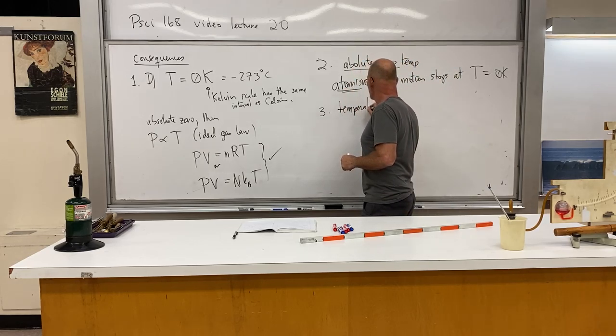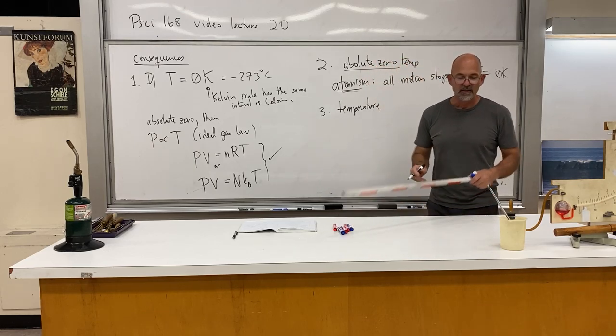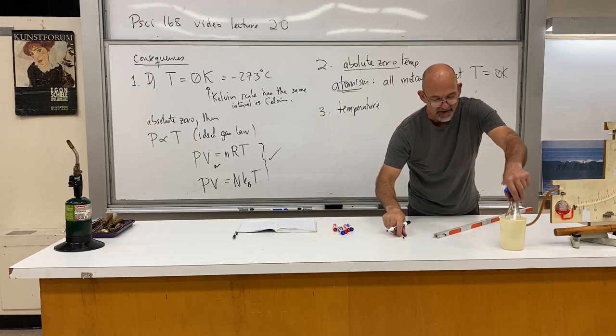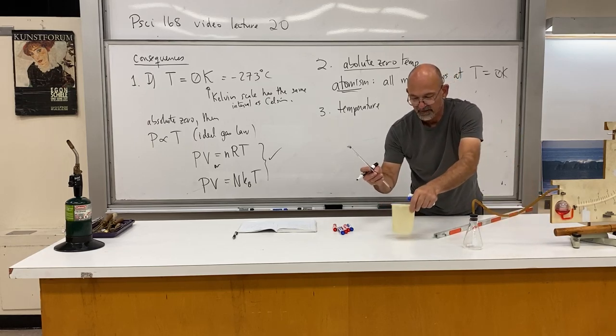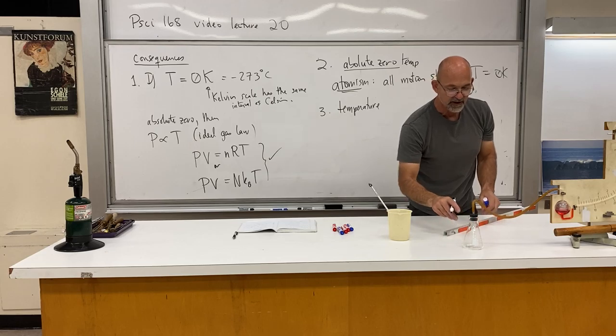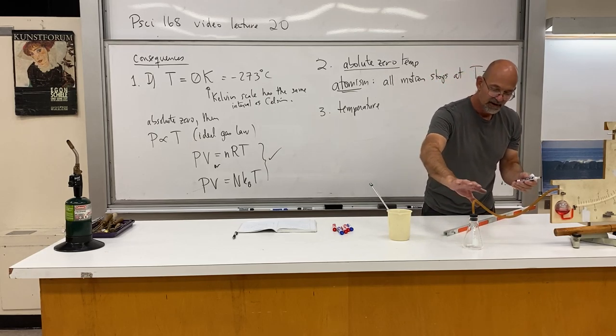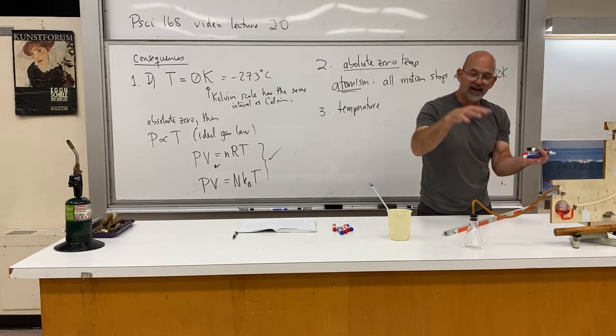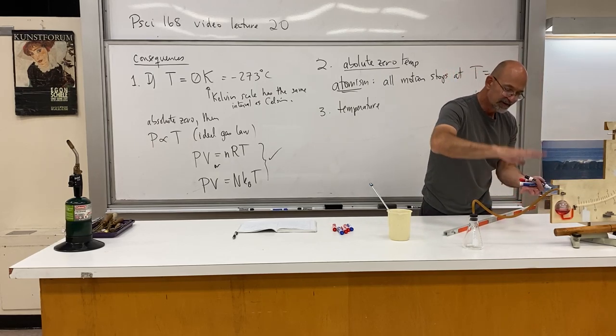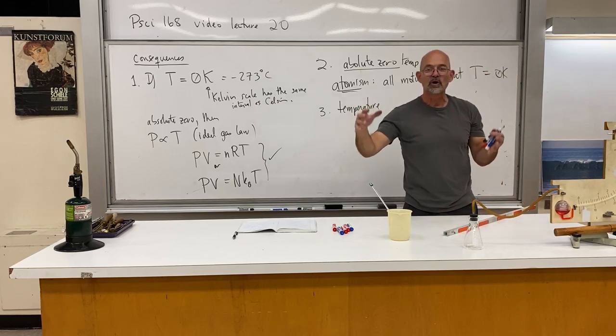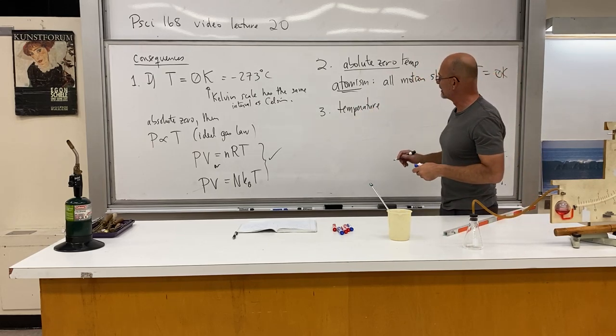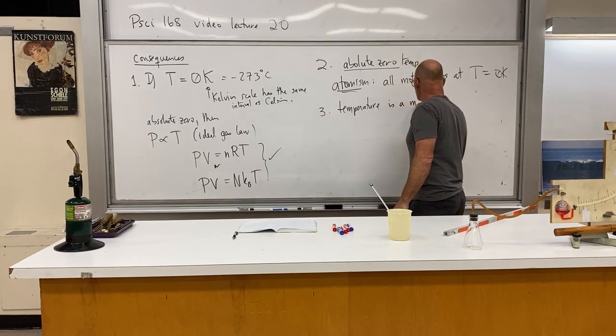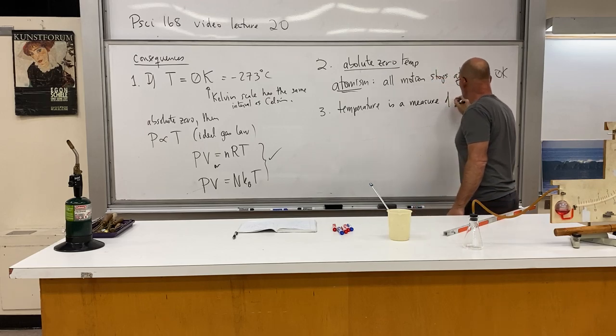So atomism, in this aspect here, all motion stops at T equals zero Kelvin. So that's because of the idea of atomism. And immediately after that, we realize that temperature is a measure of atomic motion. So the hotter the air in this flask. So the air is hotter in here. The molecules are moving faster. That translates all the way over to here. Molecules are moving faster. They collide with the fluid. They push it down. Faster motion, faster collisions, more pressure.